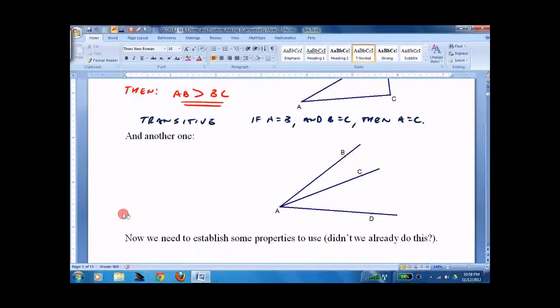There's another classic one. Measure of angle BAC plus measure of angle CAD equals measure of angle BAD.